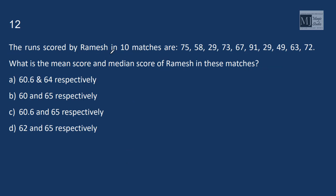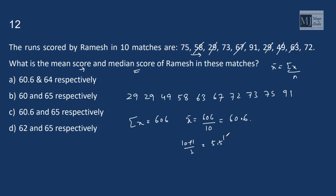The runs scored by Ramesh in 10 matches are given. What is the mean score? We know the mean is just summation x by n and median. For median, we need to arrange it. So the total of all is 606, so mean is 606 by 10, that is 60.6. Now the median is 10 plus 1 by 2, that is 5.5th element.